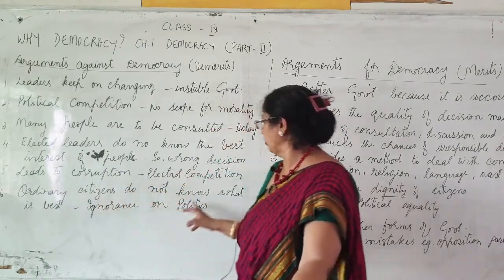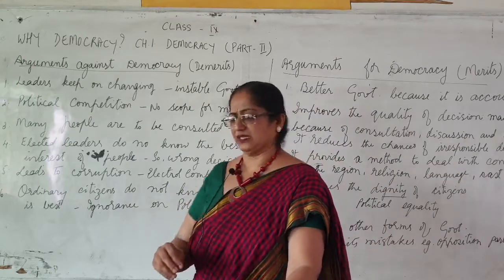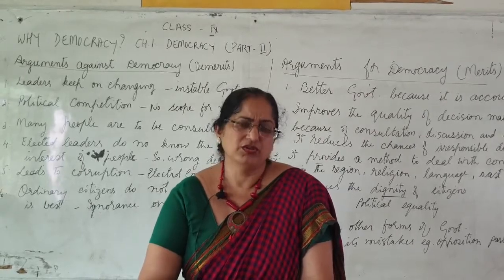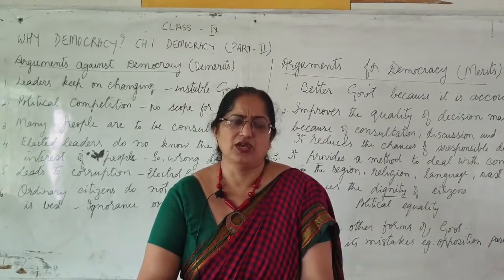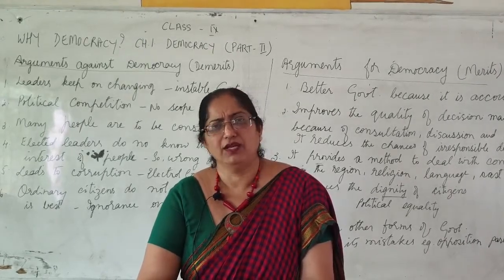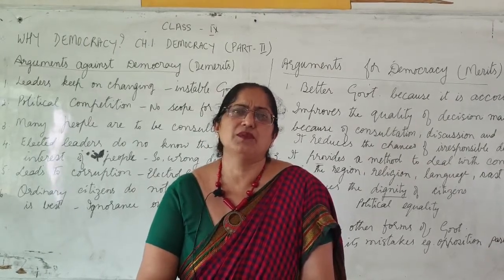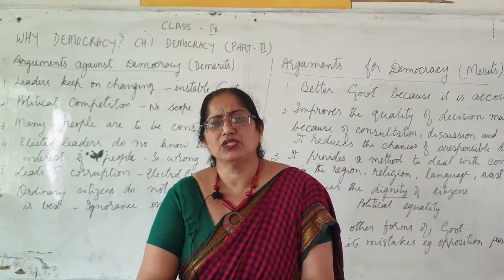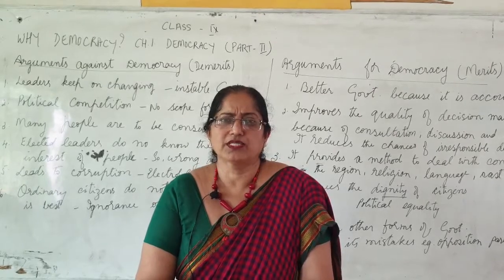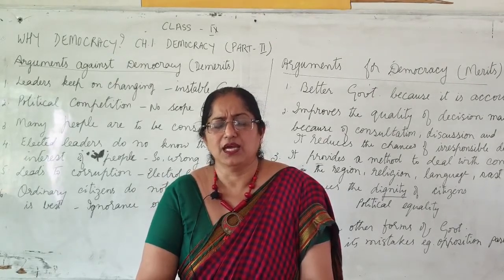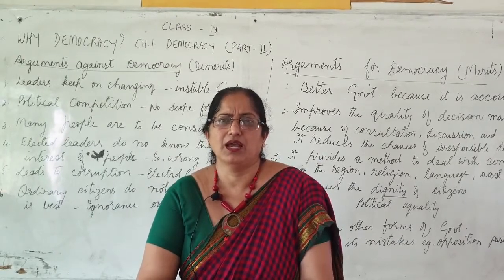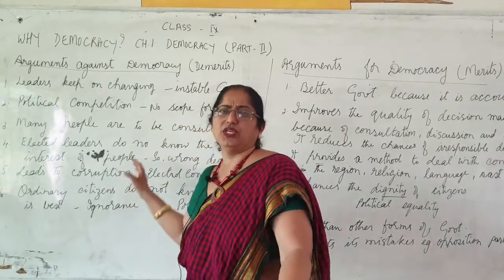The sixth and last demerit: ordinary citizens do not know what is best — there is ignorance in politics. Whether you are voting or standing for election, you should know about politics. But many people, especially in villages, do not know the ABC of politics. On voting day, if someone tells them to vote for a particular person, they just go and vote. These are the six demerits explained in the book, and I have given you a brief summary of them.